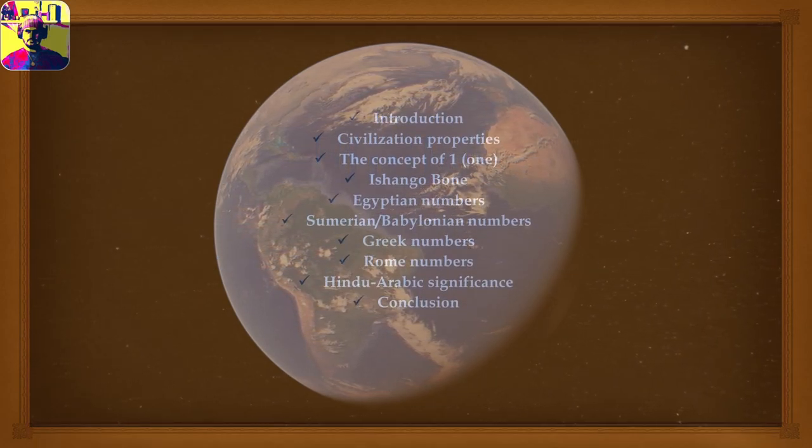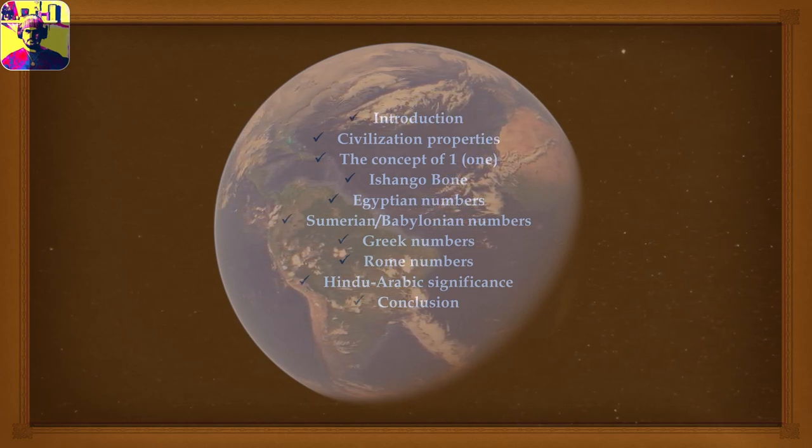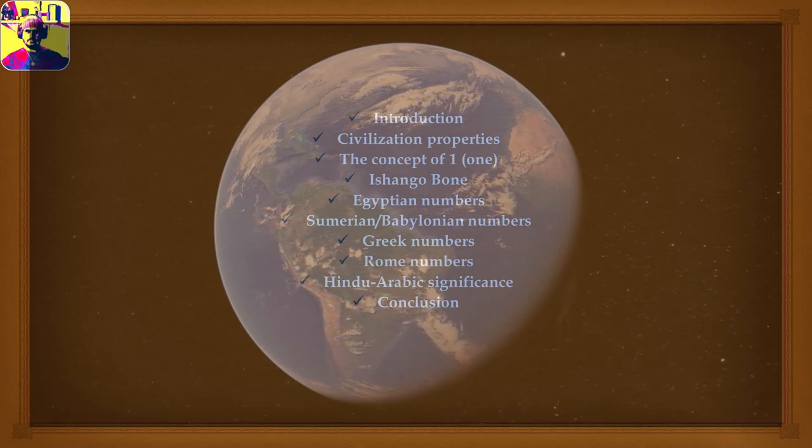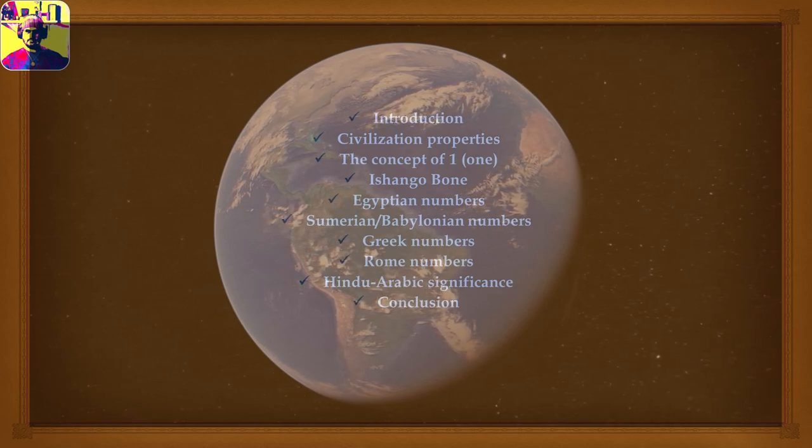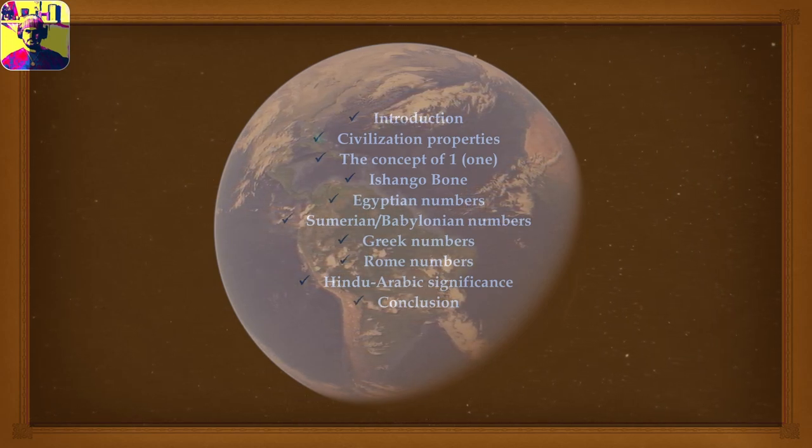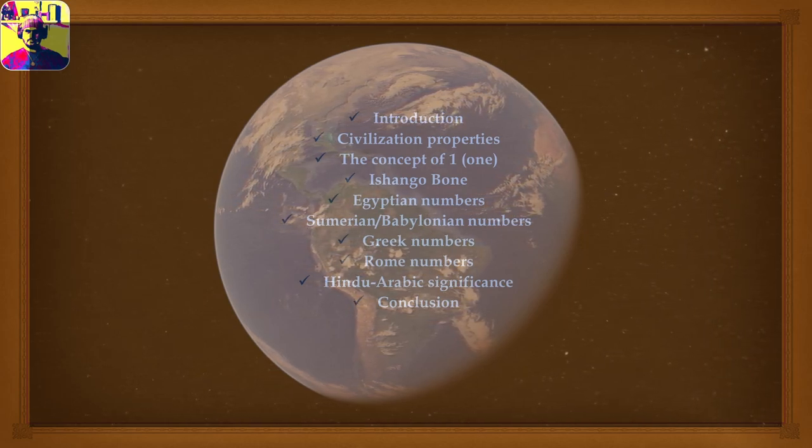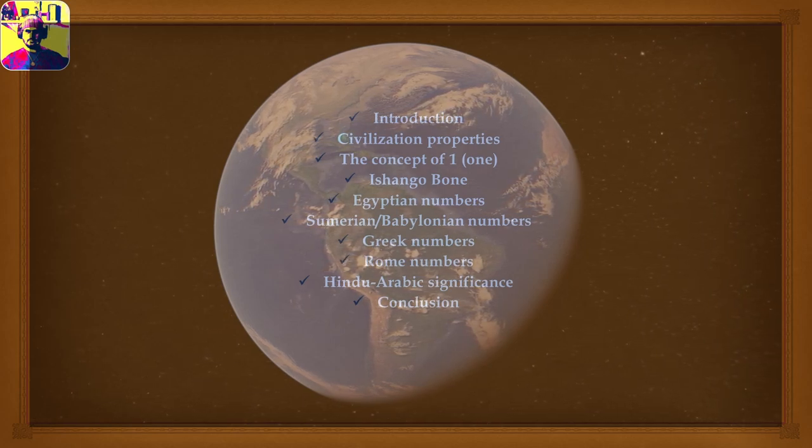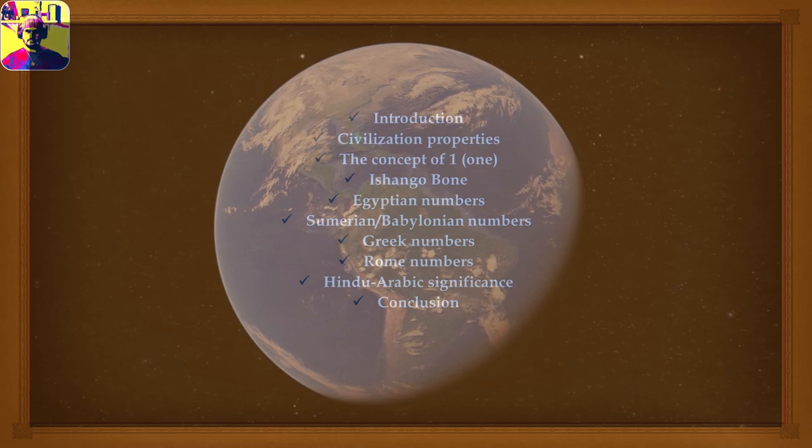As we begin our journey, we will look at the following introduction: civilization and its properties, what those are about and how they are formed, the concept of one, a brief look at the Ishango bone, Egyptian hieroglyphics and systems, Sumerian and Babylonian numbering, Greek numbering, Roman numbering, and Hindu-Arabic influences.